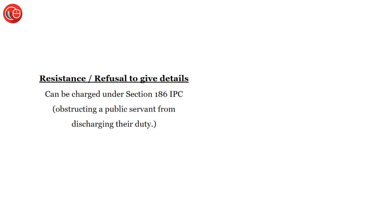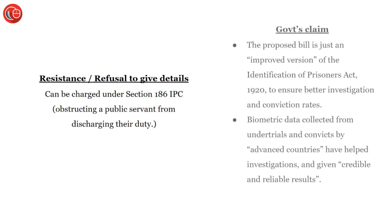Here, a person who is convicted, accused, or detained under national security law is required to give their data. The government's claim is that the previous law — the Identification of Prisoners Act 1920 — needs to be updated, and this new bill will improve investigation and conviction rates in a meaningful way.